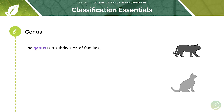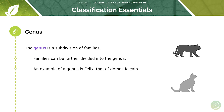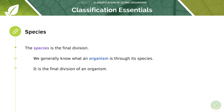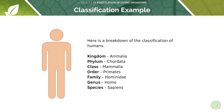The genus is a subdivision of families, so families can be further divided into the genus. An example of a genus is Felis, that of domestic cats. The species is the final division — we generally identify what an organism is through its species. To relate this back to humans, our final breakdown in terms of classification ends at the species level: sapiens.